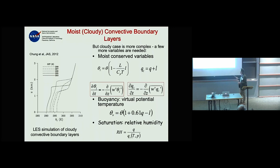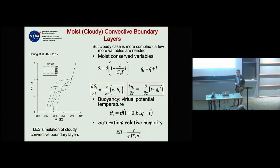Relative humidity is a convenient and intuitive variable — the ratio between the amount of water vapor in the atmosphere and how much you need before saturation. This variable has played a very important role in the development of the first cloud cover parameterizations.